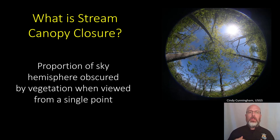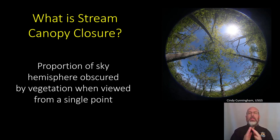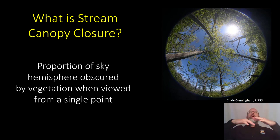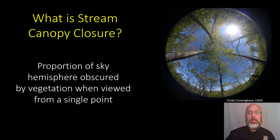Canopy closure is the proportion of the sky hemisphere above that is obscured by vegetation when you're viewing from a single point. So imagine you're walking down the stream and you look up at this wide expanse of vegetation above — it's how much of that is obscured by vegetation when you're standing in one spot.